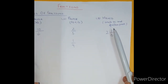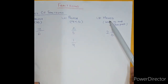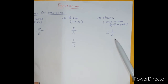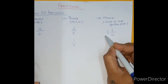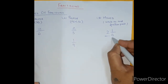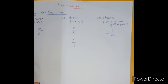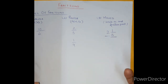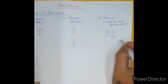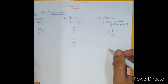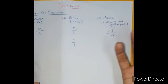The third type of fraction is called a mixed fraction. A mixed fraction has two parts: one is the whole number part and the other is the fraction part. For example, 2 and one fifth is a mixed fraction — 2 is the whole number and one fifth is the fraction part.